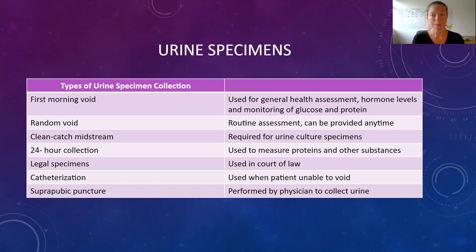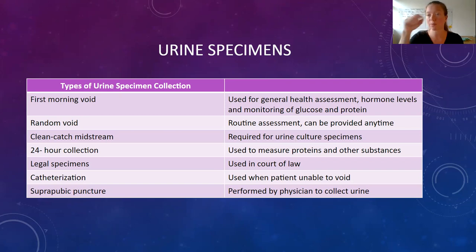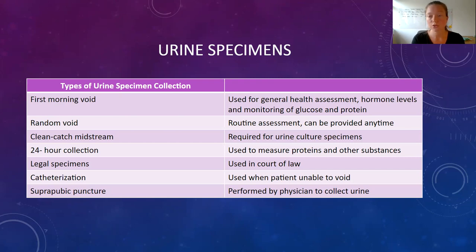A random void is a specimen collected any time of day — it doesn't matter. But sometimes you're requested to do a clean catch specimen. As the phlebotomist, you may be instructing patients on how to get an accurate clean catch. That involves cleaning the skin first with a cleanser — usually a prepackaged individual towelette. Your textbook covers the steps for cleaning and catching a clean catch urine in female versus male. For clean catch, the individual starts their stream of urine and catches it midstream after it's already started.